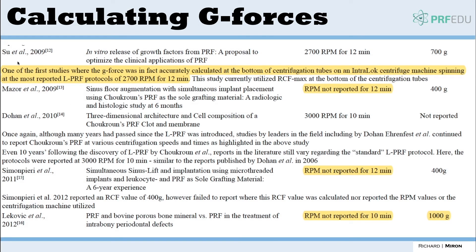One of the first studies to use the 2700 rpm protocol for 12 minutes — the current Intraspin setting — reported it as 700g, which is actually more correct, as they calculated g-force at the bottom of the tube. Even today, many people calculating the 2700 rpm, 12-minute protocol on the Intro Lock report it as 400g, but that 400g is actually reported at the RCF clot, not at the RCF max. Other studies don't report RPM at all, creating further variability.